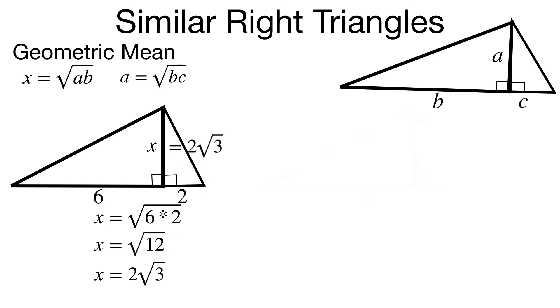Let's look at another example. This time I know my altitude length is 6, and I want to find one of those segment lengths. Set it up the same way: 6 is the geometric mean of 9 and x.